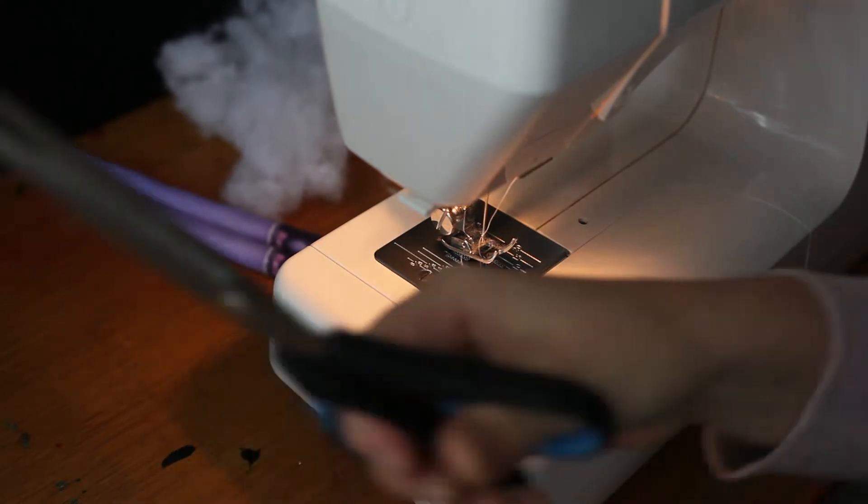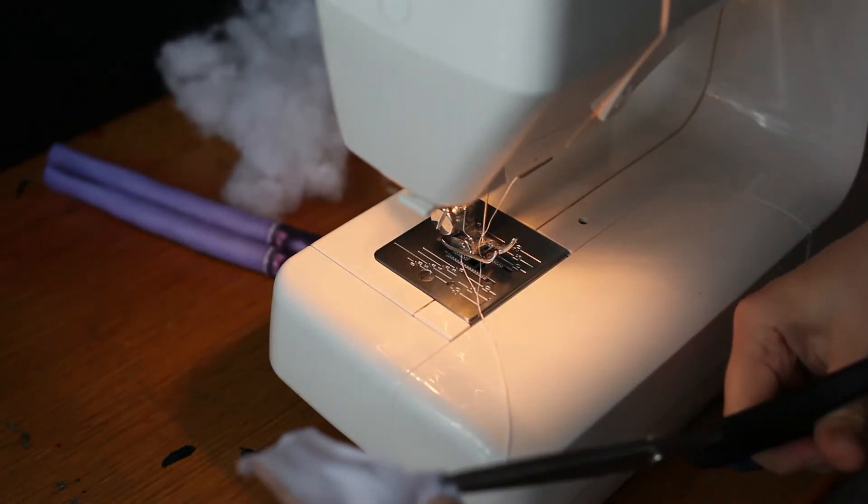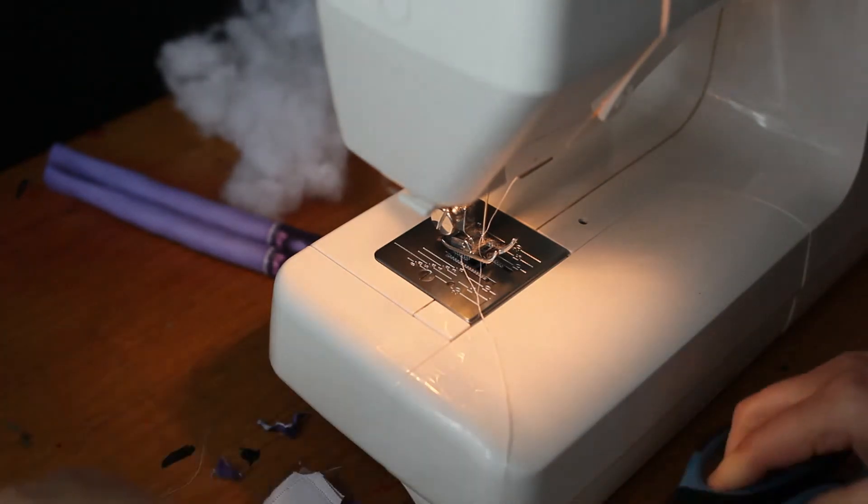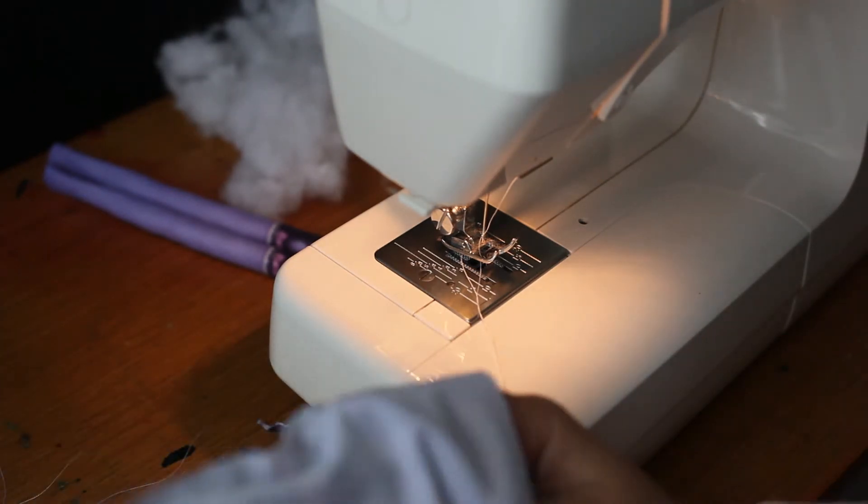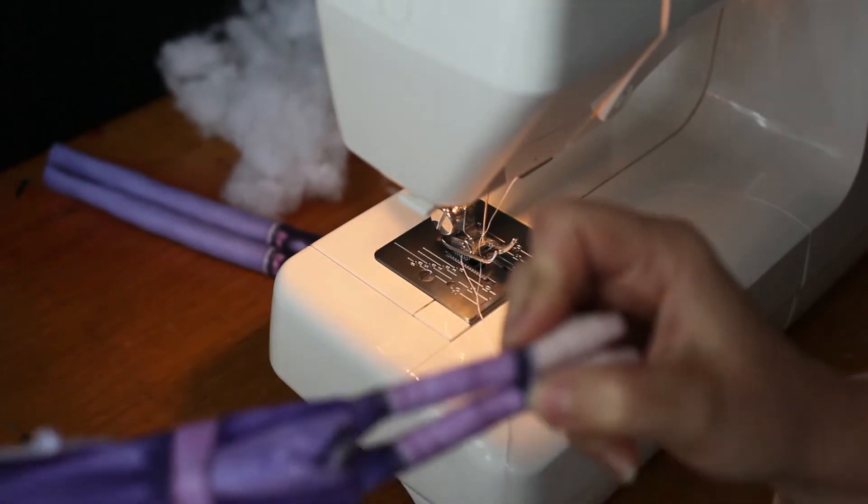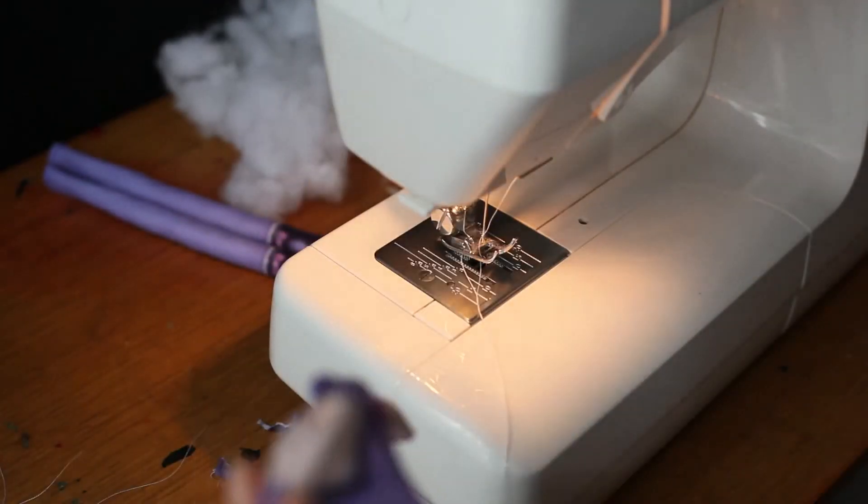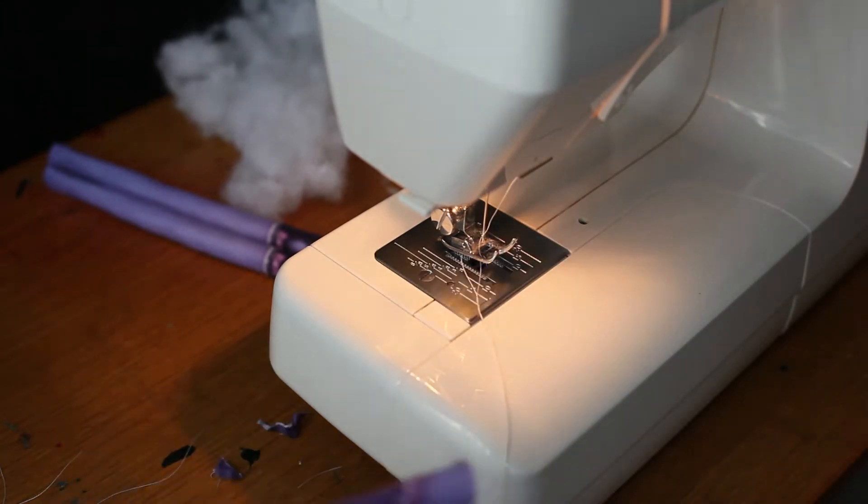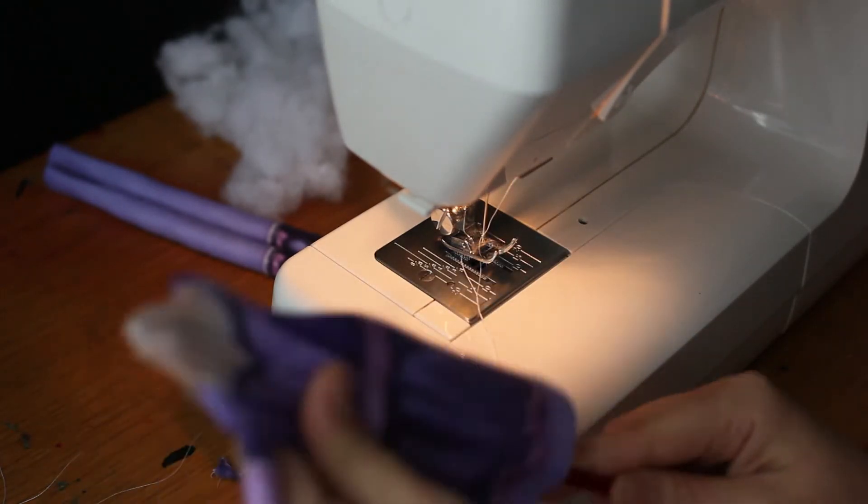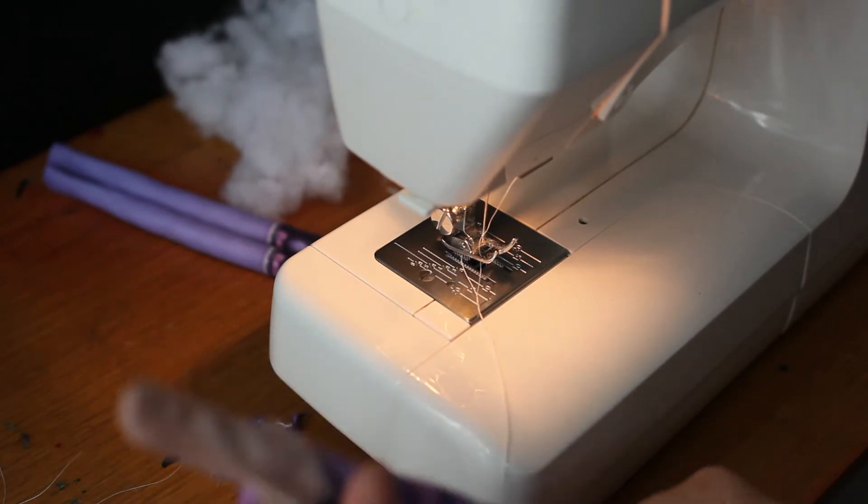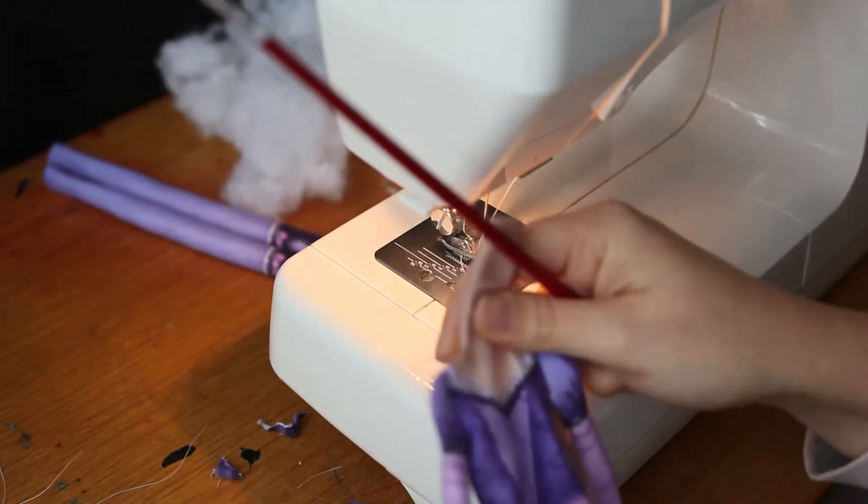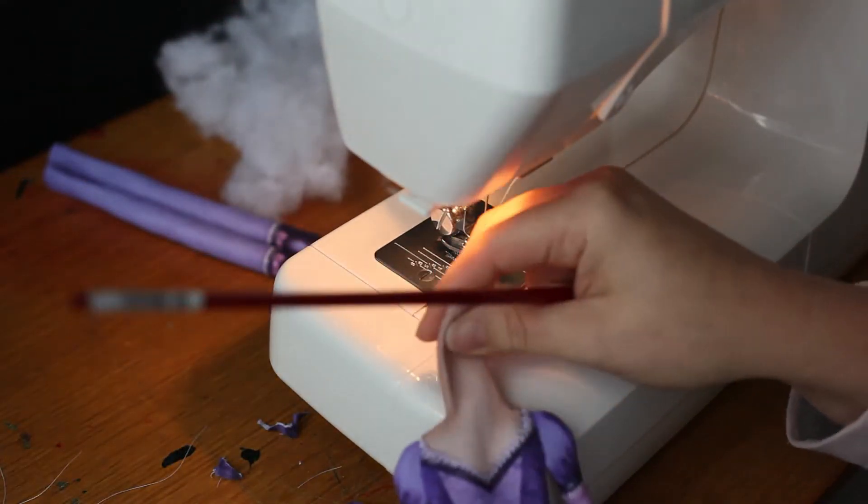And again we're going to just trim all of those corners in, clip them in. And then we turn it out. You can just grab onto those arms. Give it a little pull. And then you can use the brush to push the neck out the rest of the way. There we go.